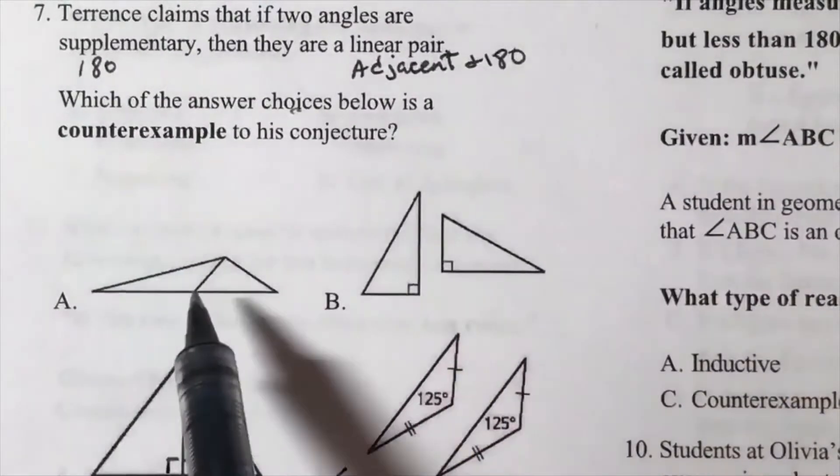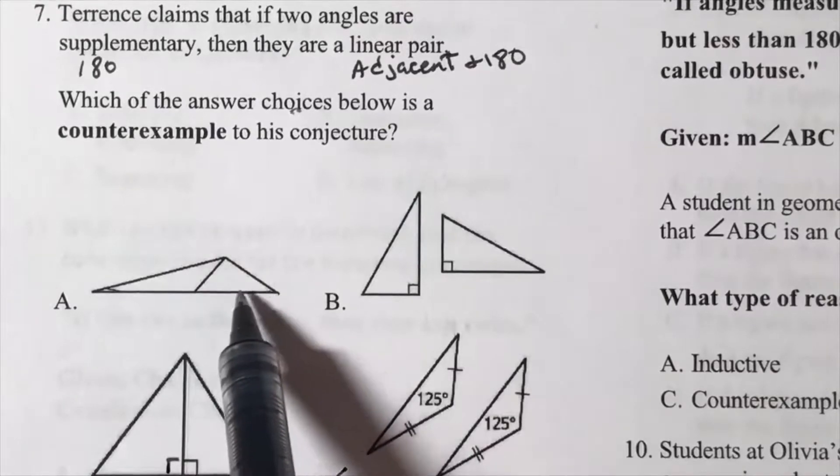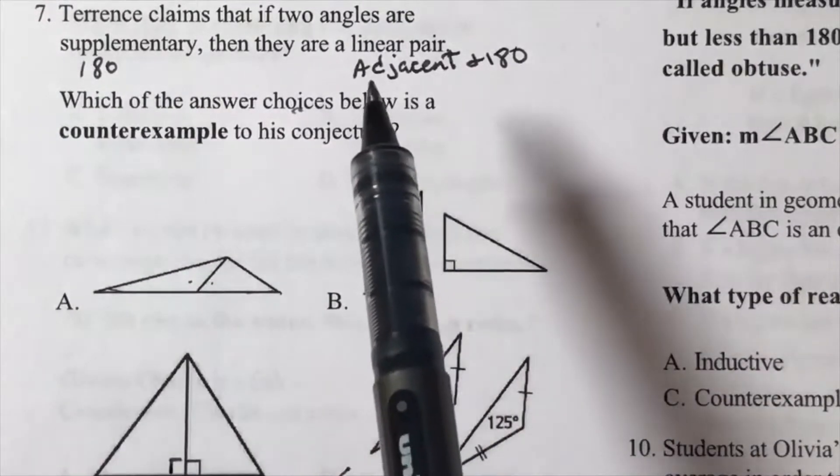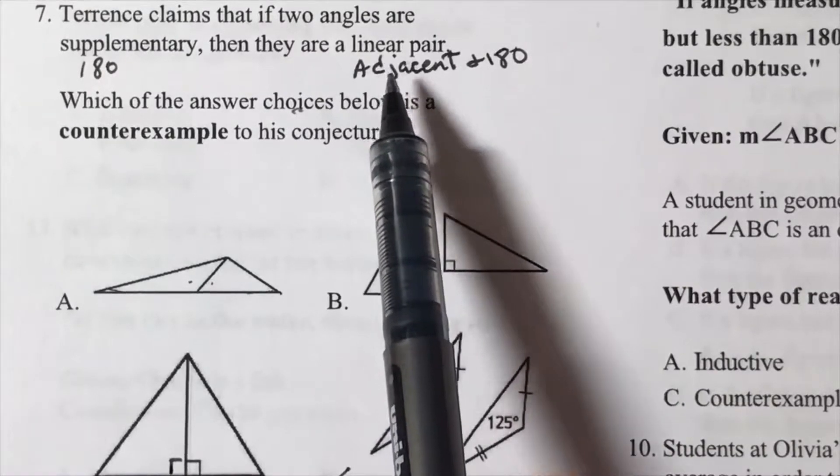And this is a straight line and these are linear, satisfying the hypothesis. Which one is proving this false?